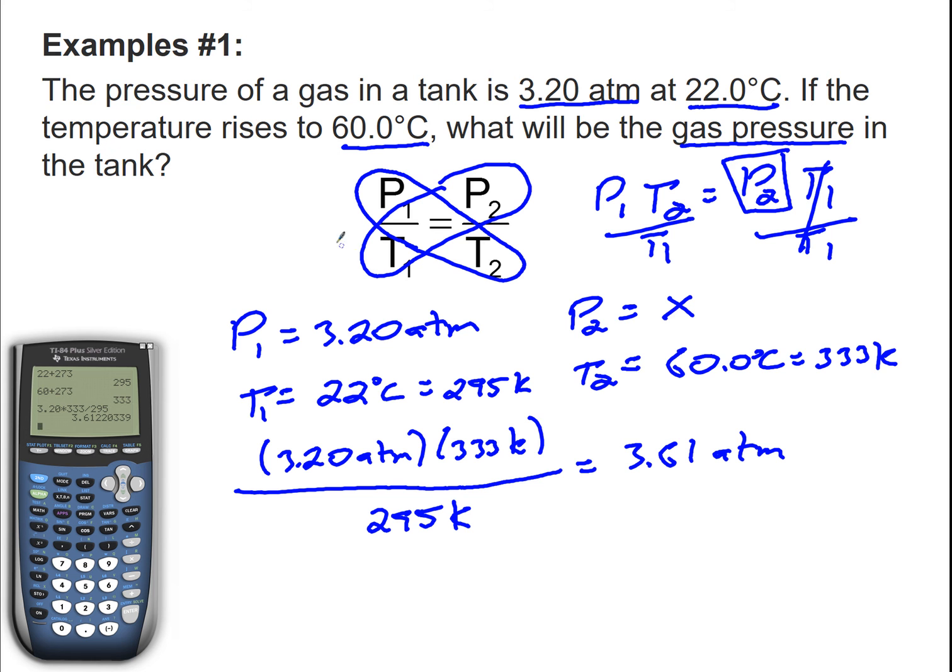The relationship between pressure and temperature is linear. It's a direct relationship. So as pressure increases, 3.2 to 3.61, temperature increases, 295 to 333. And that's consistent with Gay-Lussac's Law.